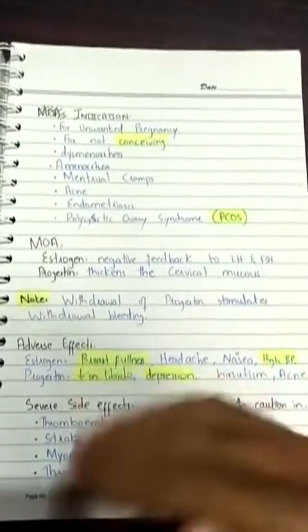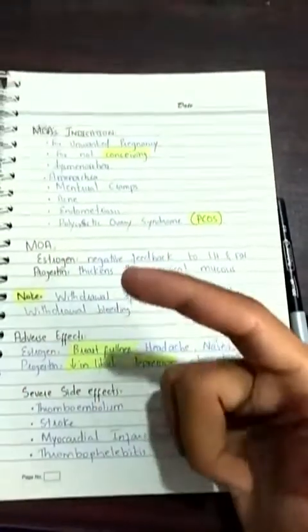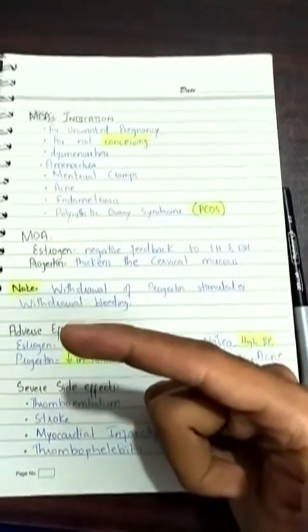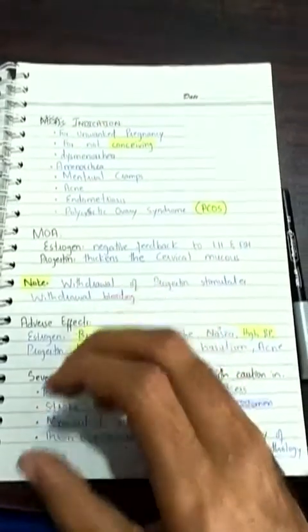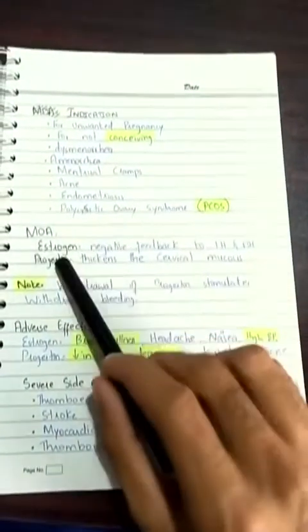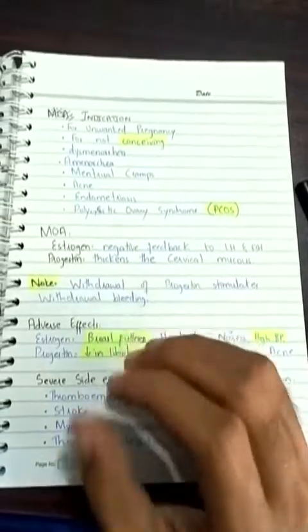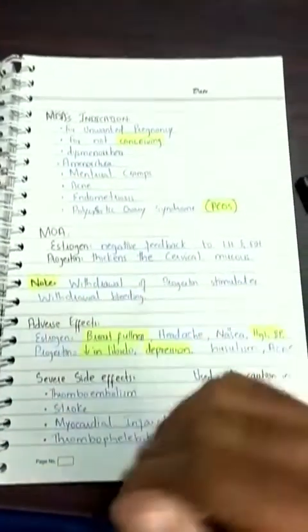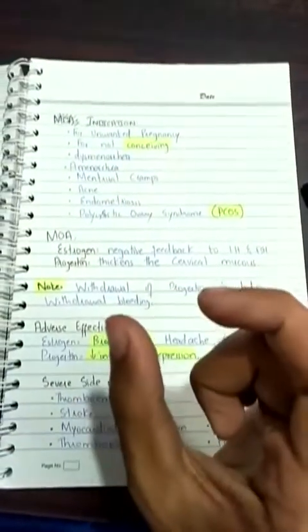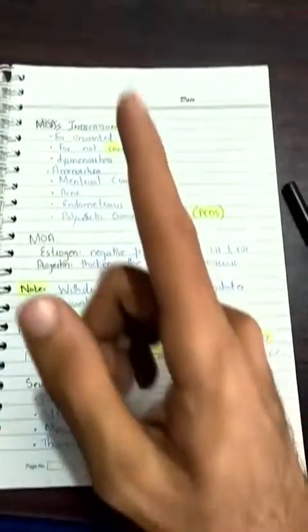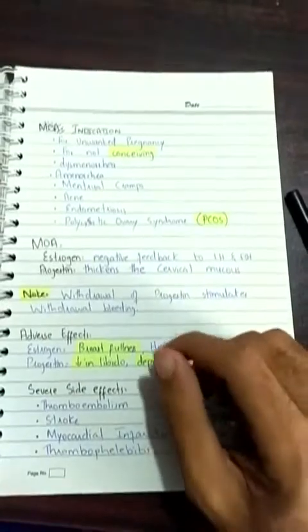Regarding the mechanism of action: estrogen exerts a negative feedback on LH (luteinizing hormone), which is important for ovulation, and on FSH (follicle-stimulating hormone), which stimulates follicular cells and the formation of the ovum. Progestin thickens the cervical mucus — normally cervical mucus should be thin so sperm can pass through to fertilize the ovum, but thick viscous mucus prevents sperm passage and fertilization.